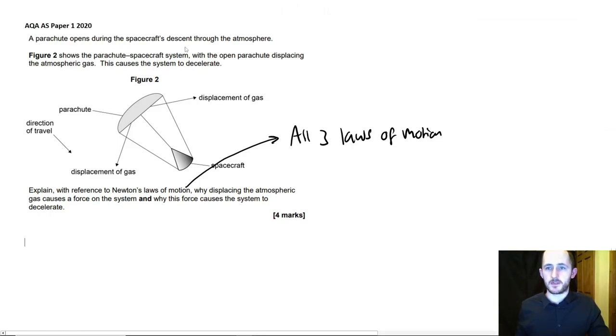So let's read the actual situation. The parachute opens during the spacecraft's descent through the atmosphere. So we've got something falling. Figure two shows the parachute spacecraft system with the open parachute displacing the atmospheric gas, causing the system to decelerate. So what you can imagine is you have a bunch of these little gas particles, and they're hitting the parachute. And that also causes them to, for the parachute to actually exert a force on the gas particles in general.